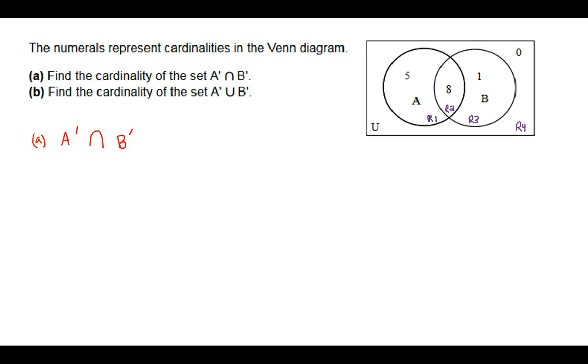Now, this U stands for universal set. It's not to say that the U is region 4. No, the universal set is all parts of the Venn diagram itself.